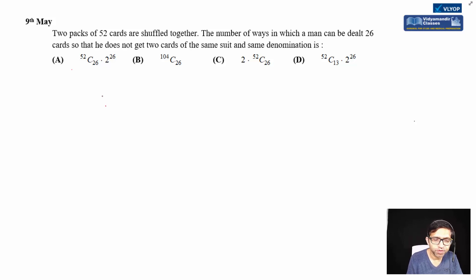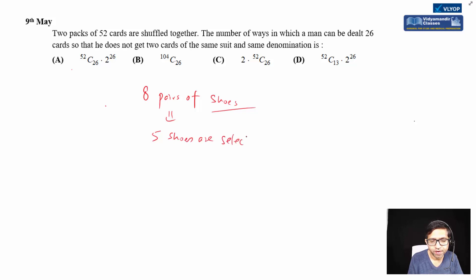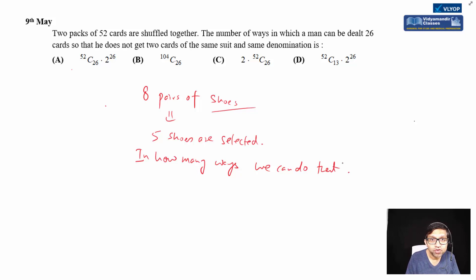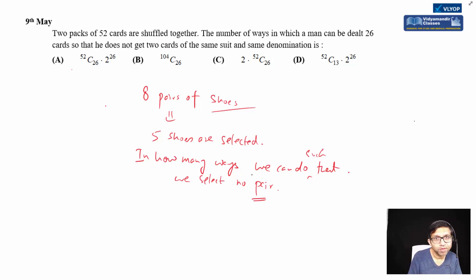For example, there are eight pairs of shoes and five shoes are selected. In how many ways can we do that such that out of five shoes we get no pair? No pair means from the five shoes selected, no two shoes form a complete pair.